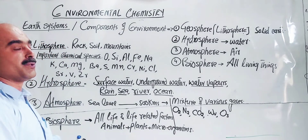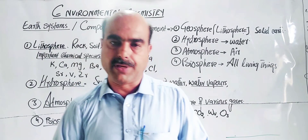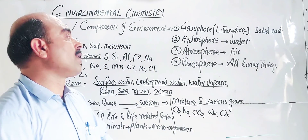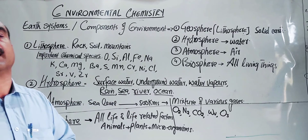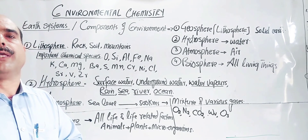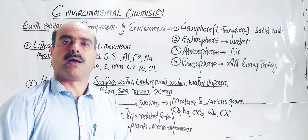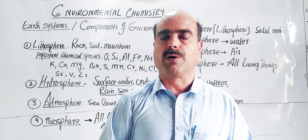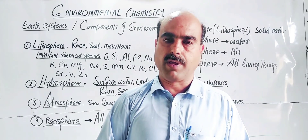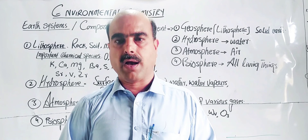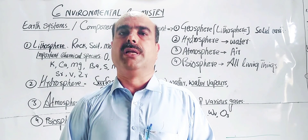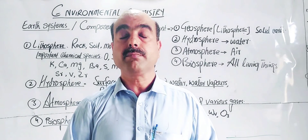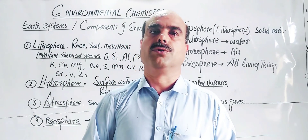So students, we have covered all about environmental chemistry: the definition and the four components of the environment. In future videos we will cover each component in detail with important chemical species. Please support by commenting, liking, and sharing this video with friends. Subscribe to the channel. Thanks a lot for watching this video patiently.